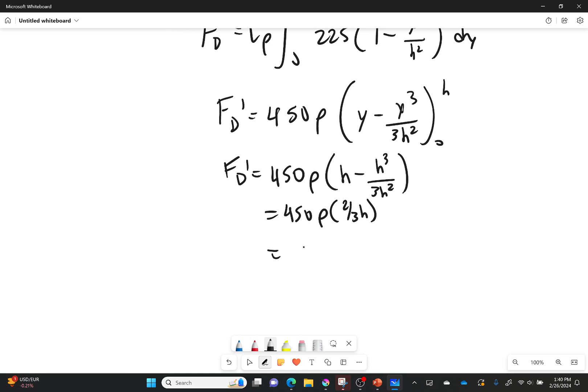And if I plug in h right there, I get that my force drag prime is equal to 450 times the density times h minus h cubed over 3h squared. That's going to be equal to 450 times the density times 2 thirds h. And if I have not made some horrible mistake with my math, this will give us our answer. So h was equal to 0.25. Density was equal to 1.225 kilograms per meter cubed. And then I have times 2 thirds. And then finally times h, which is 0.25. Plug into your calculators, people. What do we get? I'm actually really excited about this. I hope this went well. I get that this is equal to a force of 91.875 newtons.